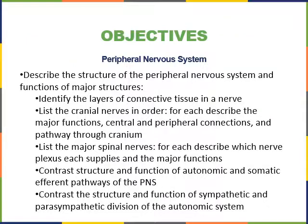As we go, we will cover the following study objectives: describe the structure of the peripheral nervous system and functions of major structures; identify the layers of connective tissue in a nerve; list the cranial nerves in order, describing major functions, central and peripheral connections, and pathway through the cranium; list the major spinal nerves and which nerve plexus each supplies; contrast the structure and function of the autonomic and somatic efferent pathways; and contrast the sympathetic and parasympathetic divisions of the autonomic nervous system.